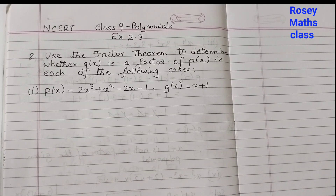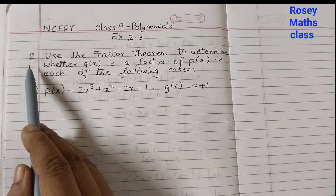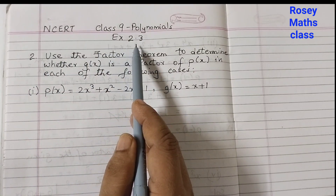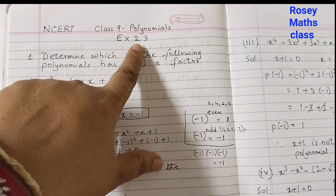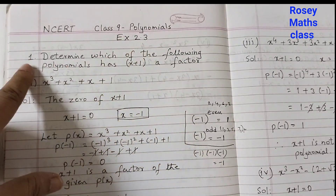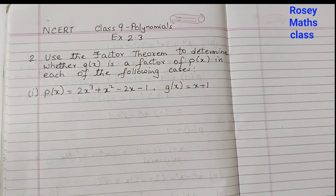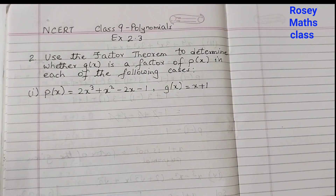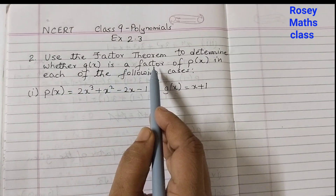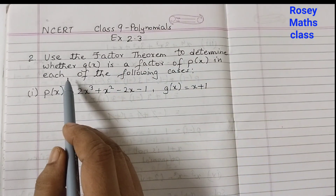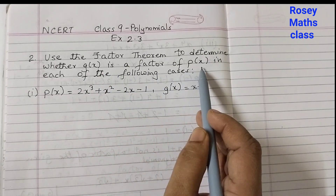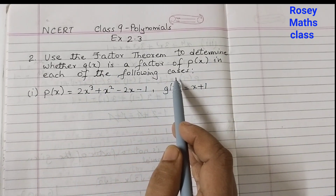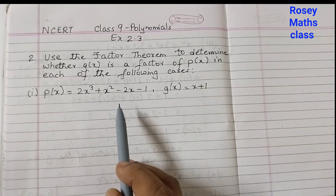Hello students, welcome back to Rosie Math class. Today we shall discuss question number 2 of Exercise 2.3, Chapter 2 - Polynomials. Yesterday we did Exercise 2.3 question number 1, and today we are doing question number 2: use the factor theorem to determine whether g(x) is a factor of p(x) in each of the following cases.